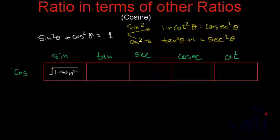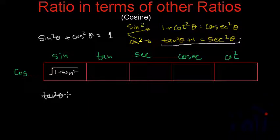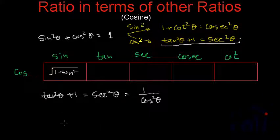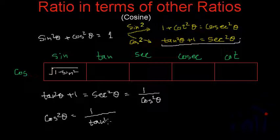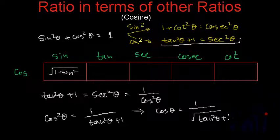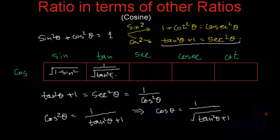Now we will convert cos in terms of tan. We have the formula tan squared theta plus 1 equals sec squared theta. Since sec is the inverse of cos, we can write sec squared theta as 1 by cos squared theta. Taking the reciprocal of both sides gives cos squared theta equals 1 by (tan squared theta plus 1). Taking the square root, cos theta equals 1 by square root of (tan squared theta plus 1).